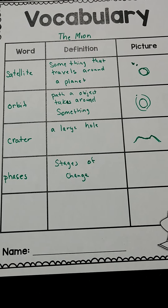There is the new moon, the full moon, the quarter moon, another quarter moon — there are about eight different moon phases, I believe. If you need to, you can always pause to write this down. So we have: satellite — something that travels around a planet; orbit — a path an object takes around something; crater — a large hole; and phases — stages of change. Every night you can see the moon changing. This is the vocab for the moon article.